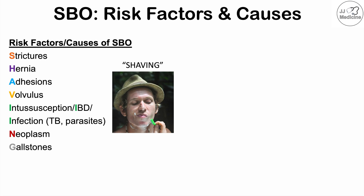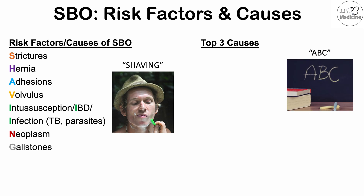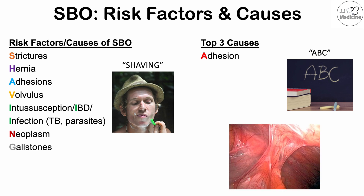There's another mnemonic to remember the top three causes of a small bowel obstruction: ABC. A stands for adhesion — the most common cause, particularly in those with a prior history of abdominal surgeries. When a patient has had open abdominal surgery, tissue can form between the abdominal wall and the small intestine, creating a kink that causes an occlusion or blockage.